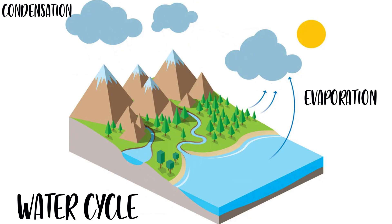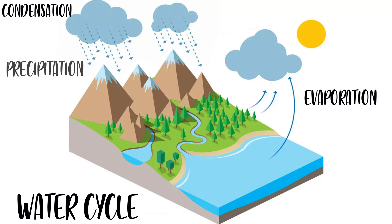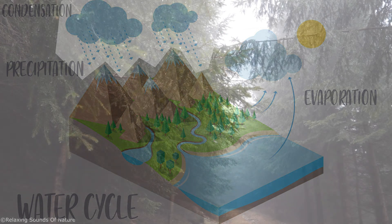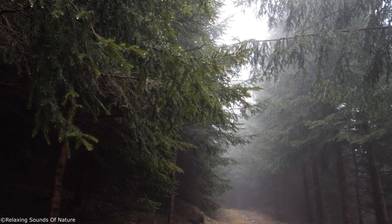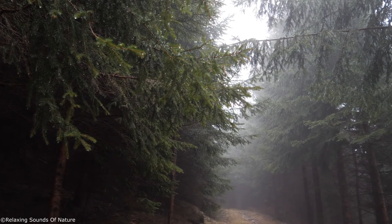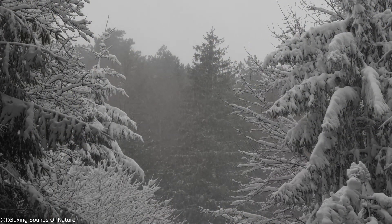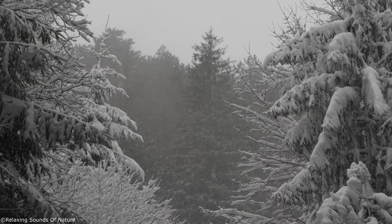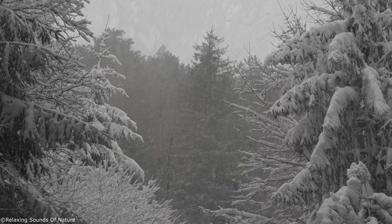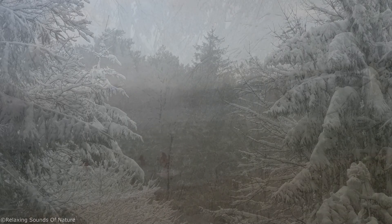The water droplets precipitate and can fall on the sea or, more interestingly, on land. Precipitation is when this condensed water falls from the sky. If the water falls in a liquid state, we often call it rain. But if it falls in a solid state, we can call it snow or hail.